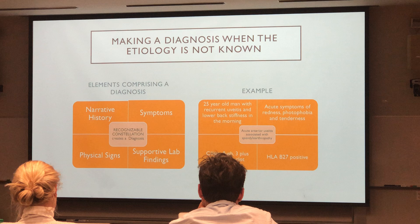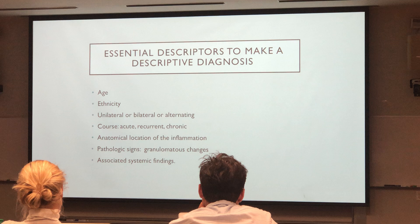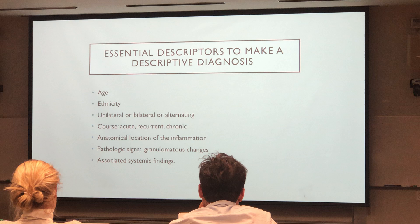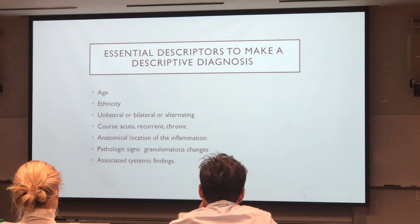When we make a descriptive diagnosis, there are some essential elements we have to include: age, ethnicity, whether it's one eye or both eyes, or whether it alternates from one eye to the other. The clinical course — acute, recurrent, or chronic — anatomical location, and pathological signs that will give us a clue, like retinal changes. And we look for associated systemic findings.